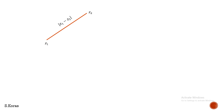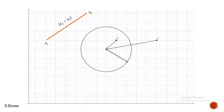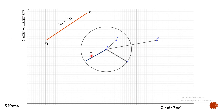Let us consider a graph with a circle — this is the real axis and this is the imaginary axis. The center is A and the radius is R. We are considering three points: point B which is inside the circle, point C which is outside the circle, and point D which is on the circle.